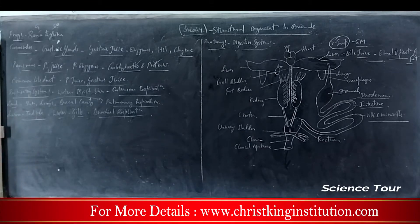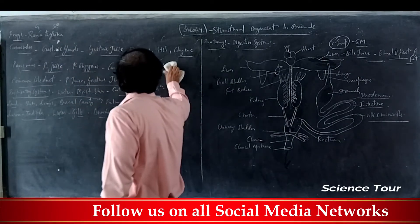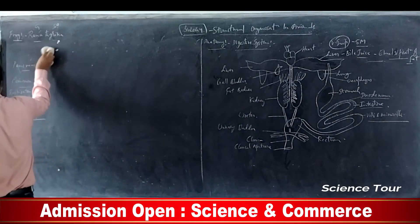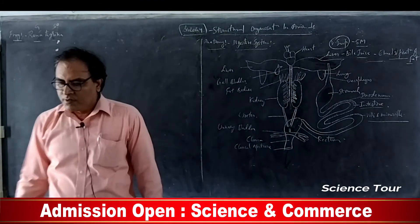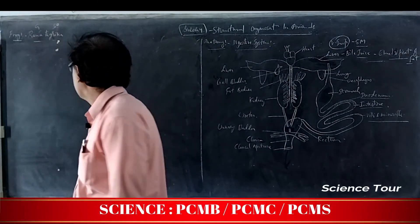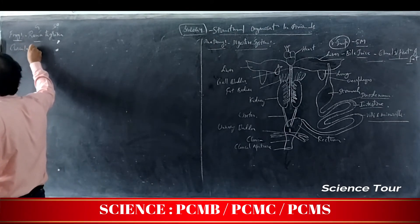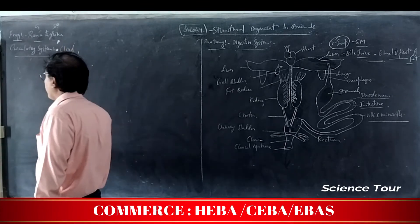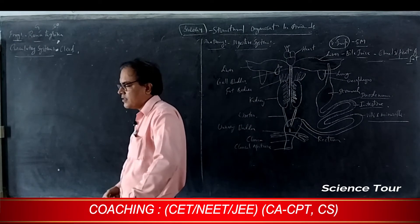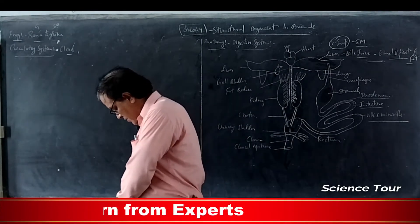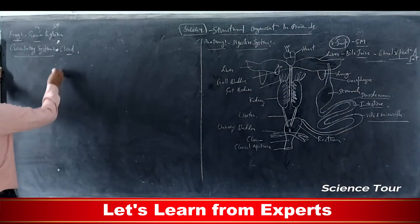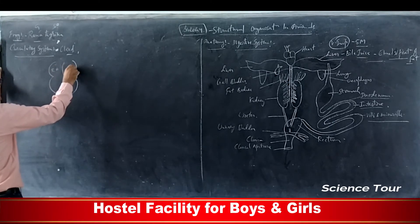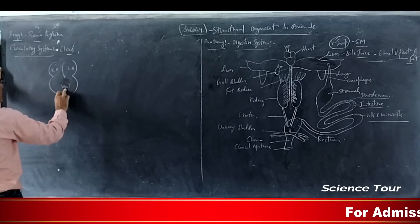The circulatory system in frogs is very well developed and is of the closed type, because blood flows through blood vessels. The heart is well-developed and muscular. The heart is three-chambered — it has a right auricle, a left auricle, and a single ventricle.